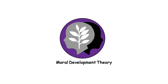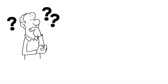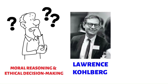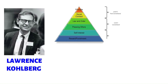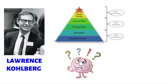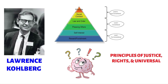Moral Development Theory outlines stages of moral reasoning and ethical decision-making across the lifespan. Lawrence Kohlberg proposed six sequential stages of moral development, grouped into three levels — pre-conventional, conventional, and post-conventional — which reflect increasingly complex and abstract moral reasoning based on principles of justice, rights, and universal ethical principles.